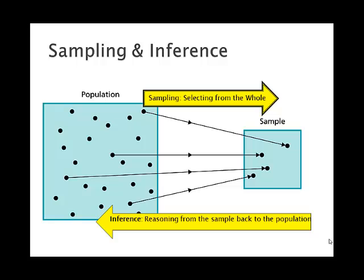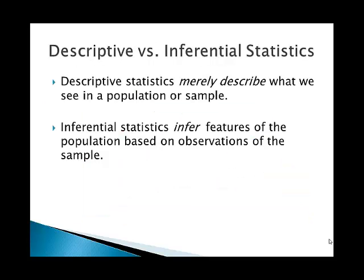Now, inferential statistics always involves first a population — the set of all individuals or items under study — and then a sample, which are the particular ones we're going to look at. In general, the population is very large or inaccessible, so we can't study all of it. The sample, however, is small and accessible, so we study the sample in order to infer conclusions about the population. Sampling involves selecting a subset of individuals to study, and inference means reasoning in a quantitative way from the sample back to what the population must be like. Descriptive statistics merely describes what we see; inferential statistics infers features of the population based on observations of the sample.